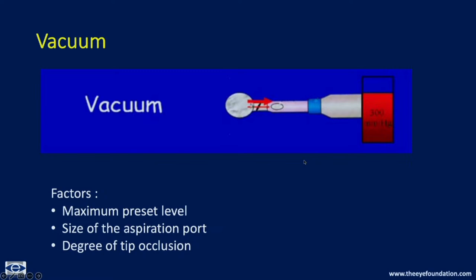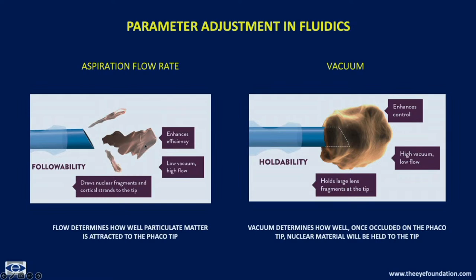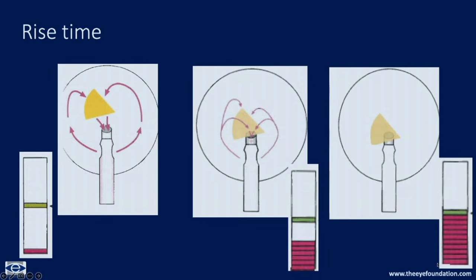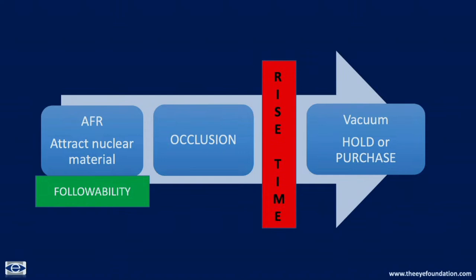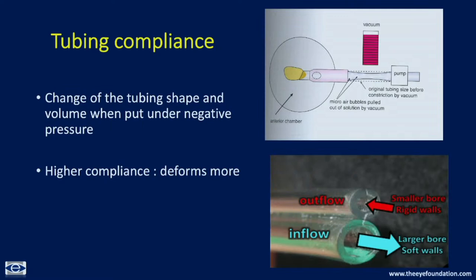Vacuum builds once occlusion is maintained with the peristaltic pump - since no more fluid enters, but the rollers keep moving, a negative pressure builds in the phaco probe giving you the vacuum or hold. AFR gives followability when unoccluded and pieces move toward the probe. Once the piece occludes the tip, the vacuum gives subsequent purchase over the nucleus. The time it takes for the maximum preset vacuum to build after occlusion is called rise time. AFR gives followability which brings the pieces, occludes the tip, and then the vacuum builds to the maximum preset - that interval is the rise time.